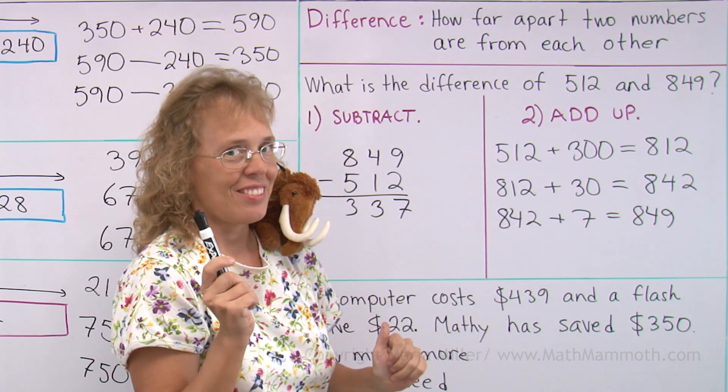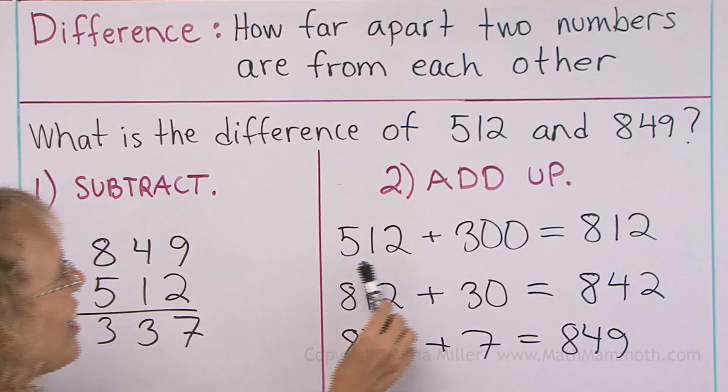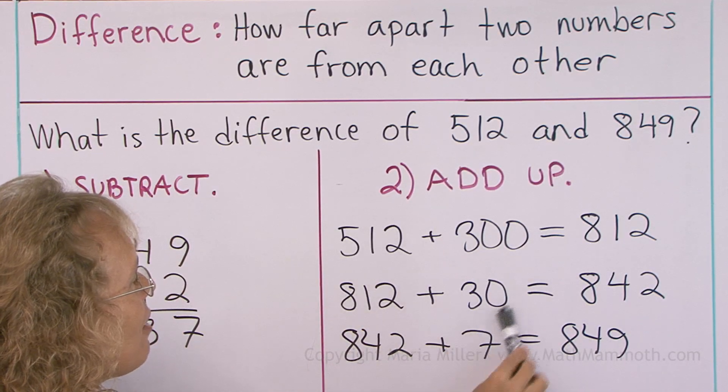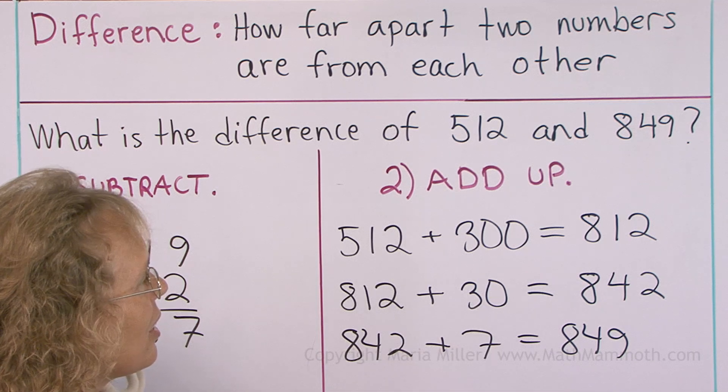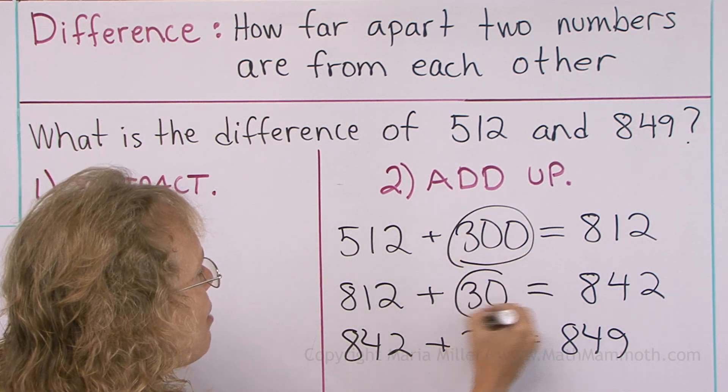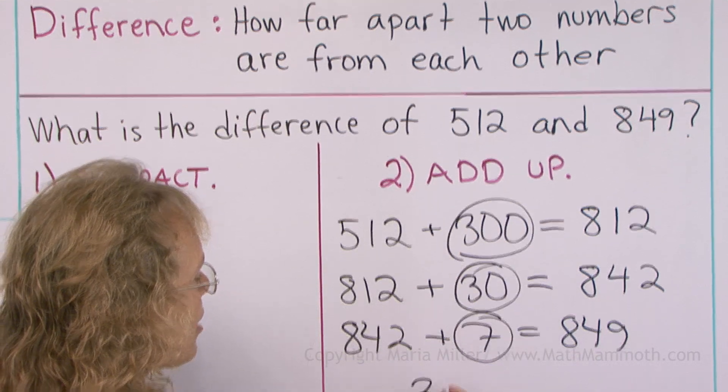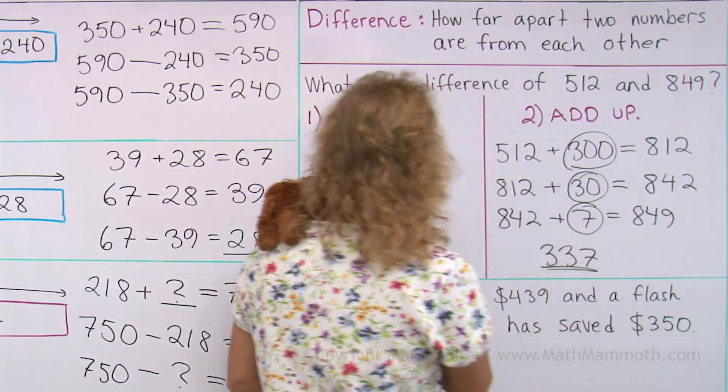And so what is the difference now? We're not yet quite done, right? I first made this kind of a jump, and then this kind of a jump, and then this kind of a jump. So I need to add my jumps, and the difference is 337, just like we got here, of course.